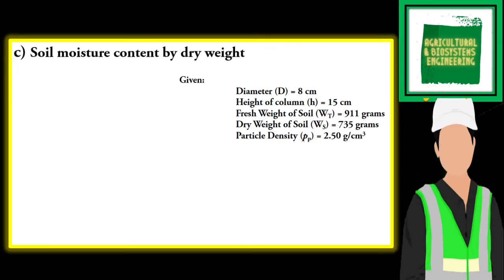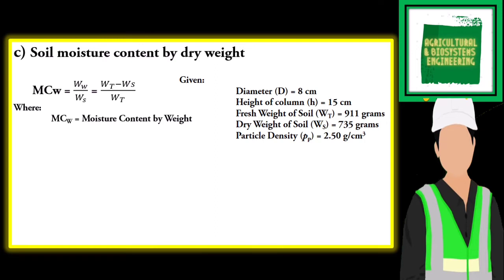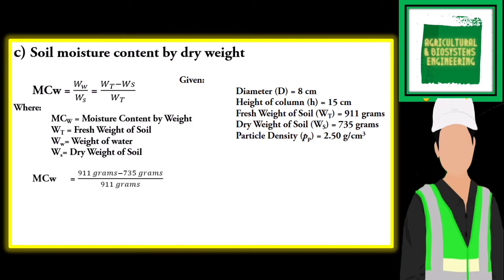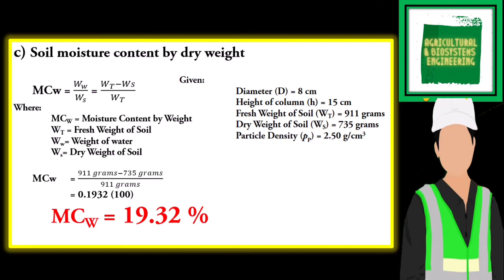Next, we solve for the soil moisture content by dry weight. We will be using this formula, substituting the values we have. The answer is 19.32 percent for our moisture content by dry weight.